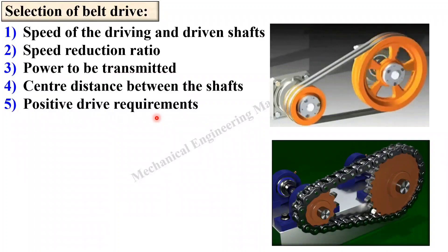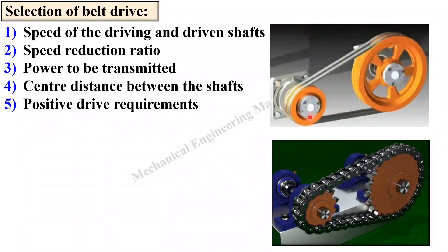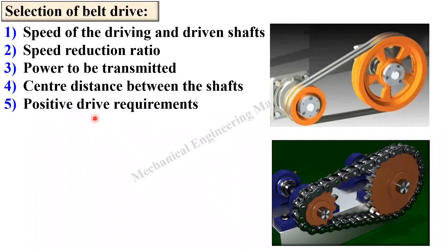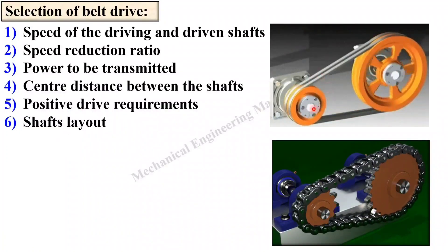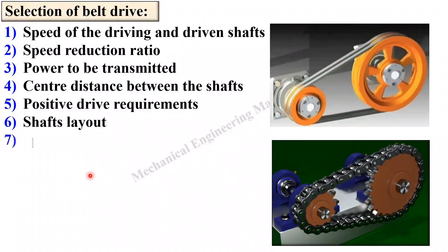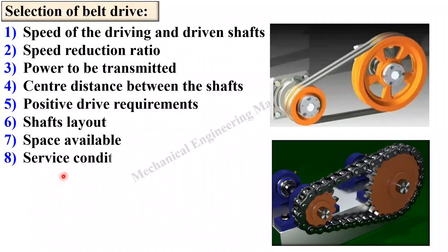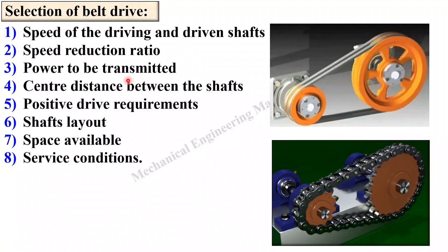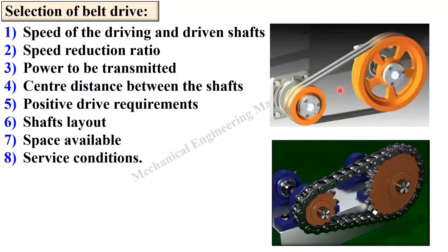Next, positive drive requirements — if you do not want any type of slip when transmitting power from one shaft to another shaft, it is called a positive drive. Next, shaft layout — that means the different types of arrangement of the pulley with the belt. Next, space available. Next, service condition. These are the different parameters for the selection of the belt drive.